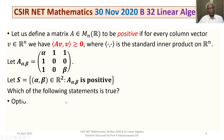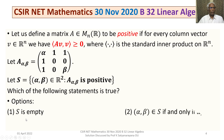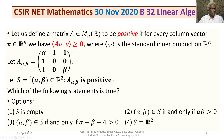Which of the following statements is true? Option 1: S is empty. Option 2: (α, β) belongs to S if and only if the product αβ is greater than 0. Option 3: (α, β) belongs to S if and only if α + β + 4 is greater than 0. Option 4: S is the whole of R².